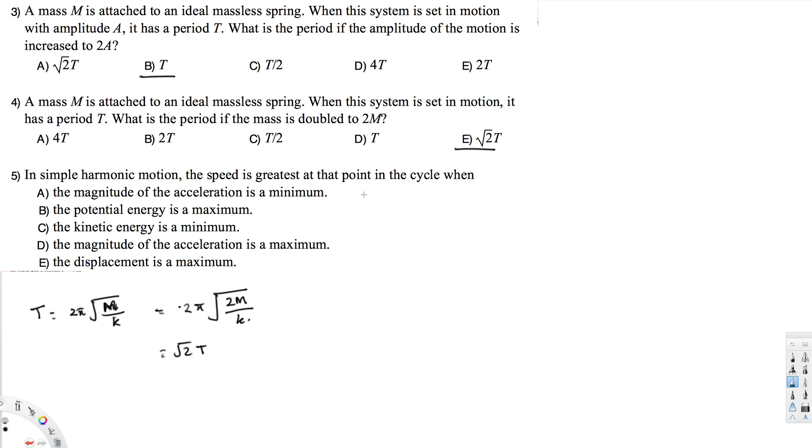The next one: in simple harmonic motion, the speed is greatest at that point in the cycle when... okay, so the maximum speed occurs when...